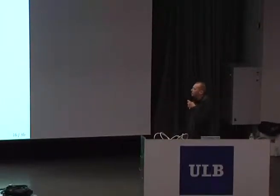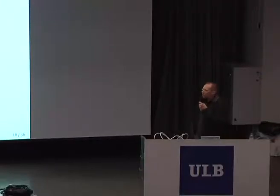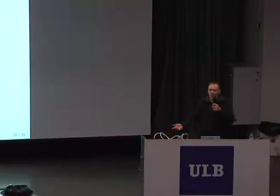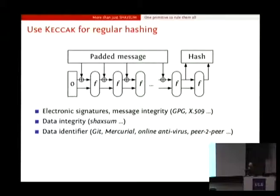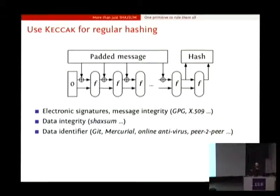The first application is hashing, because it was a submission to the hash contest. What you do is just truncate the output to some length. If you want a 160-bit hash like SHA-1, you just truncate to 160 bits. If you want 256 bits, you just truncate to 256 bits. Here are some examples of where hash functions are used: in electronic signatures, they are used to do a public key operation like RSA or elliptic curve on a message. If you would have to do that on a very long message, like a document of one megabyte, that would take a long time. So the message is compressed to a hash, and it's the hash that is signed.